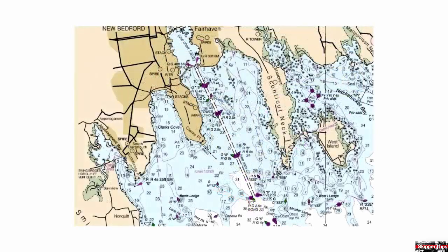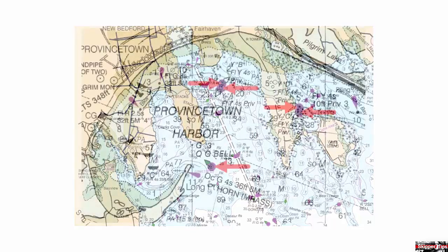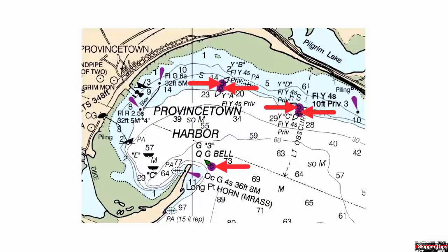Note the basic landmass colors on this chart. A light buff color shows land above the water at all stages of the tide. A dark gold color shows heavily populated areas. And green shows intertidal waters that cover and uncover with the tide.